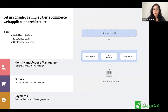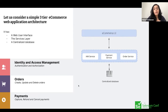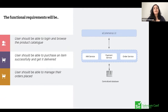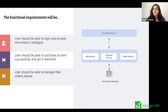There are three types of services: the identity and access management service, which handles authentication and authorization; the order service, which handles order management — creating, modifying, or deleting orders; and the payment service, which handles payment requests, cancellations, refunds, etc. Functional requirements are usually prioritized and driven by the business. Some examples: the user should be able to log in and browse the product catalog, purchase an item and get it delivered, and manage and track orders.